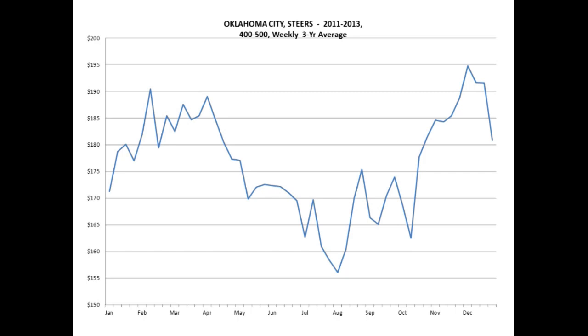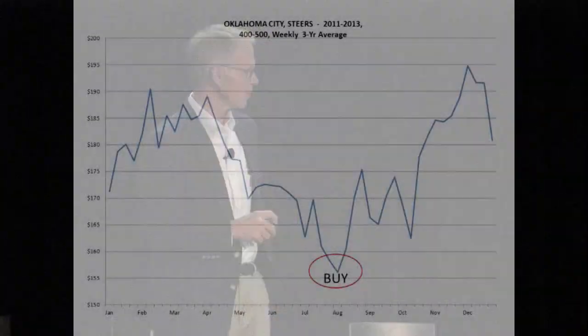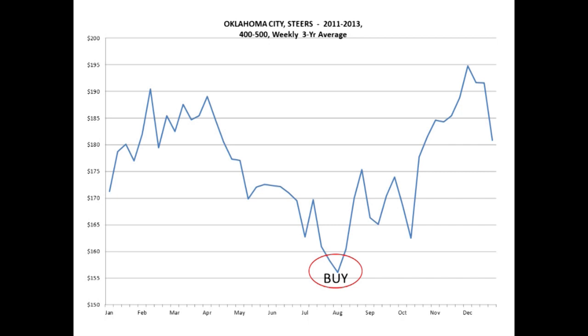As we look at these markets, are there opportunities for marketing? Looking at the last three years of four-to-five-weight weekly prices — a three-year average — the first weeks of 2011, 2012, and 2013 show the average price for a four-to-five-weight calf was a little over $1.70. If you were going to buy or sell a four-to-five-hundred-weight calf during the year, when would you want to do that? You'd want to buy during the August time period — that's the lowest price of the year. If you were going to sell, those earlier and later months are the times to look at.